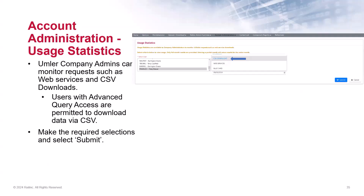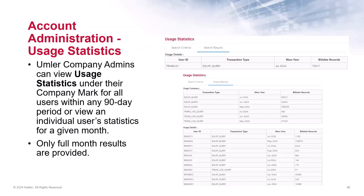Also within the Account Administration tab is the Usage Statistics feature. This is where company admins can choose to monitor usage for any web service transactions or CSV downloads that are performed by users within their company. You would make the required selections for what you wish to view and select Submit. You can view the usage statistics for all users within a 90-day period or view an individual user's statistics for a given month. These tools will be useful for managing usage activity with regard to equipment access and downloaded queries.